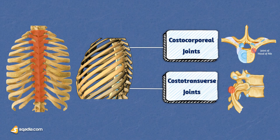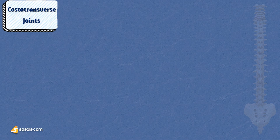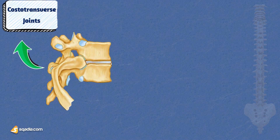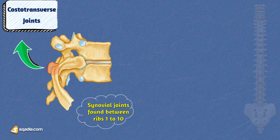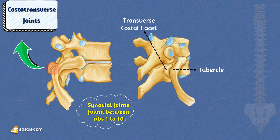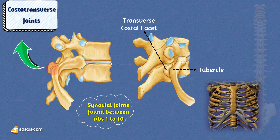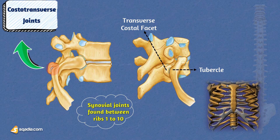Now let's talk about the second group of costovertebral joints. These synovial joints are found in ribs 1 to 10. They occur between the articular facet on the rib's tubercle and the transverse costal facet on the transverse process of the corresponding vertebra. Ribs 11 and 12, on the other hand, don't have tubercles and don't articulate with the transverse processes of their related vertebrae. These joints are essential for respiratory function and contribute to the flexibility and movement of the rib cage during breathing.